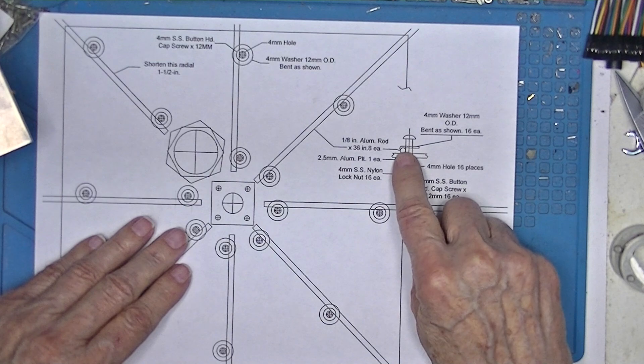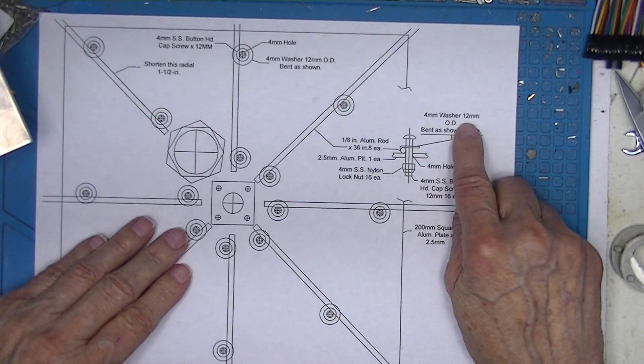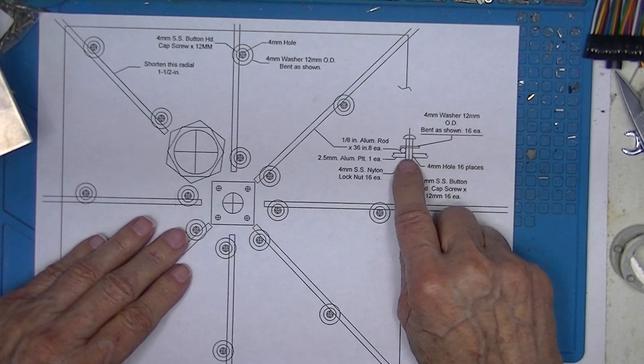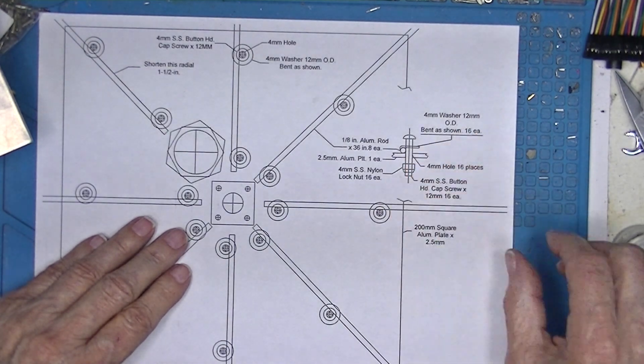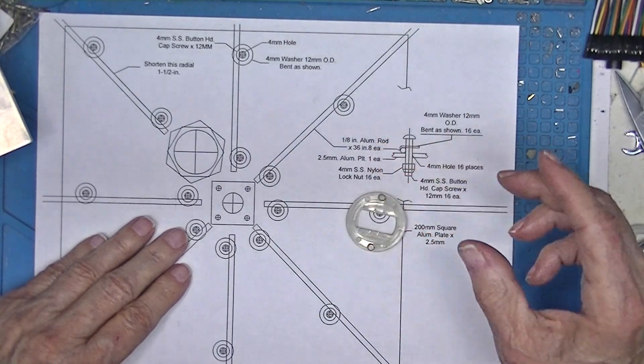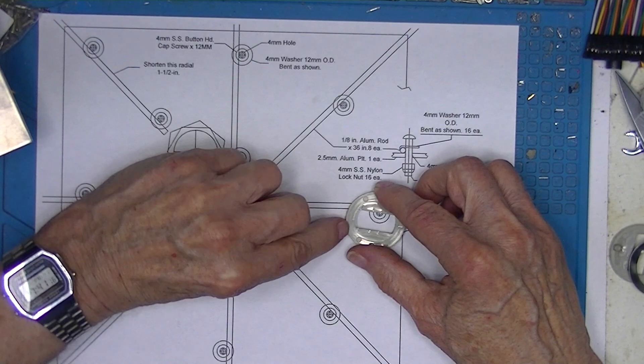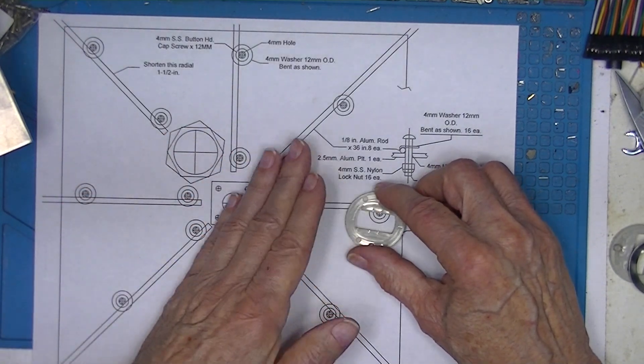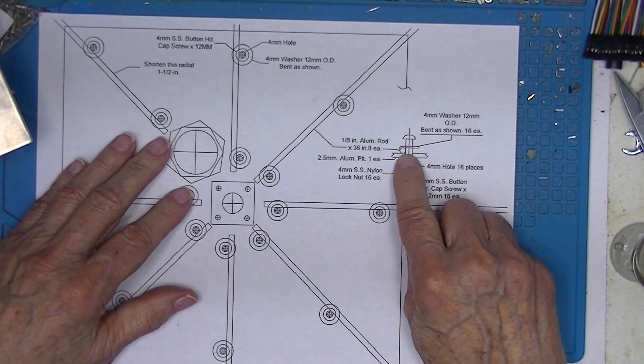We're going to take a 4mm washer—I've got some with a 12mm OD. I think if I put them in the vise and just bend, picture this is a washer, bend over this portion right here, that I can fit an eighth inch rod underneath this clamp.